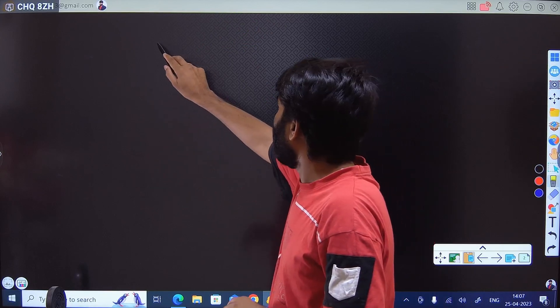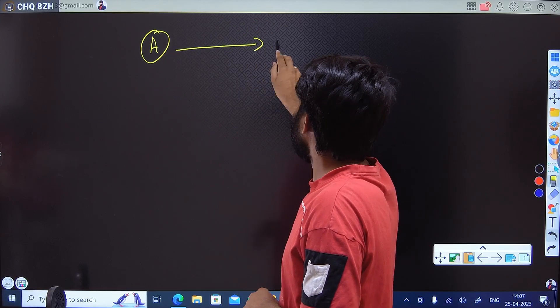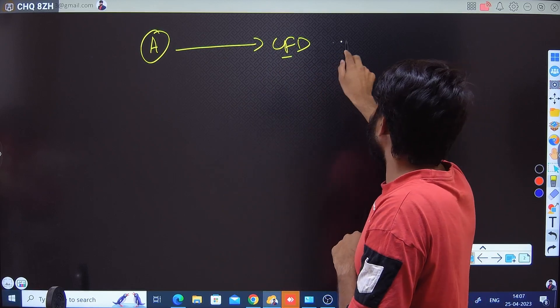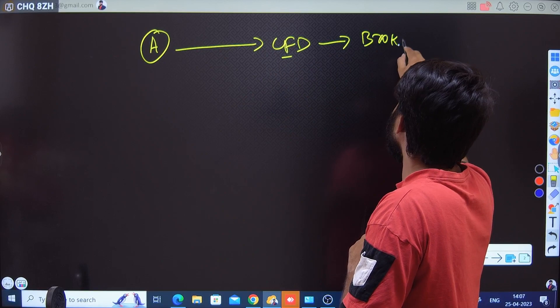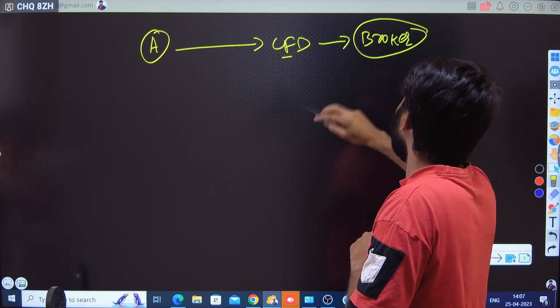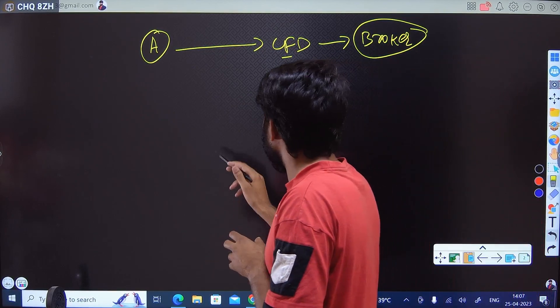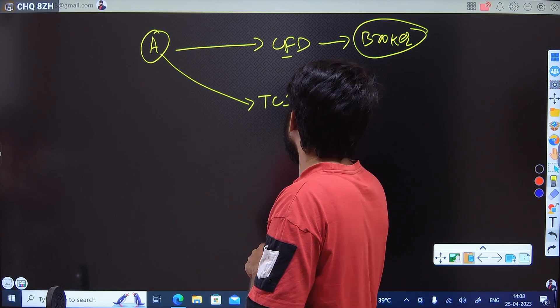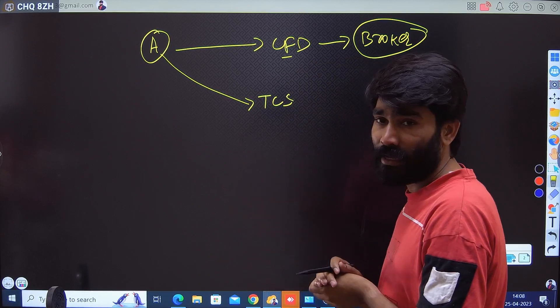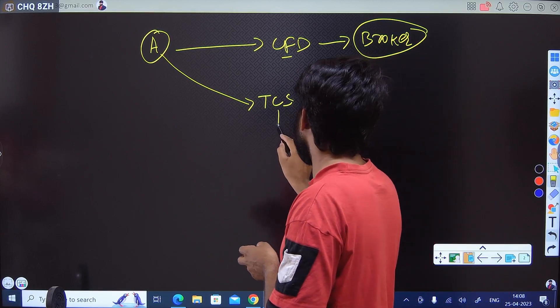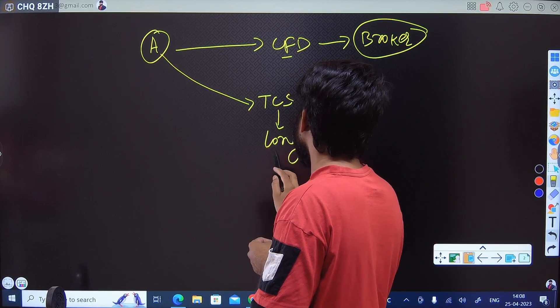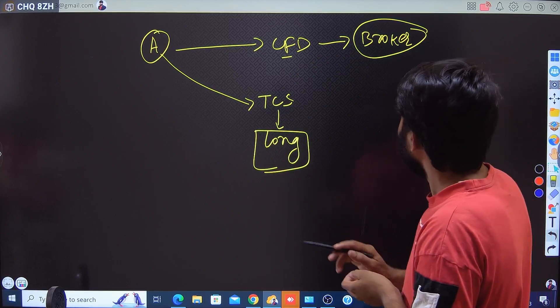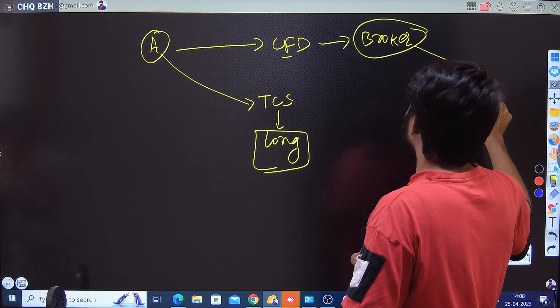Let's say there is party A who is interested in CFD. That party can meet the broker and put a proposal. Let's assume party A is interested in TCS security, and this party is very bullish on long position.